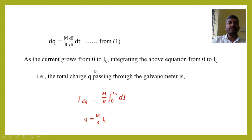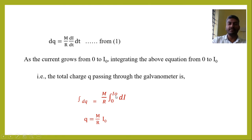If the current rises from 0 to the maximum value I₀ in the secondary circuit, we can integrate this expression. Integrating dQ gives Q = M/R is a constant, and integrating dI from 0 to I₀ gives Q = (M/R) × I₀.